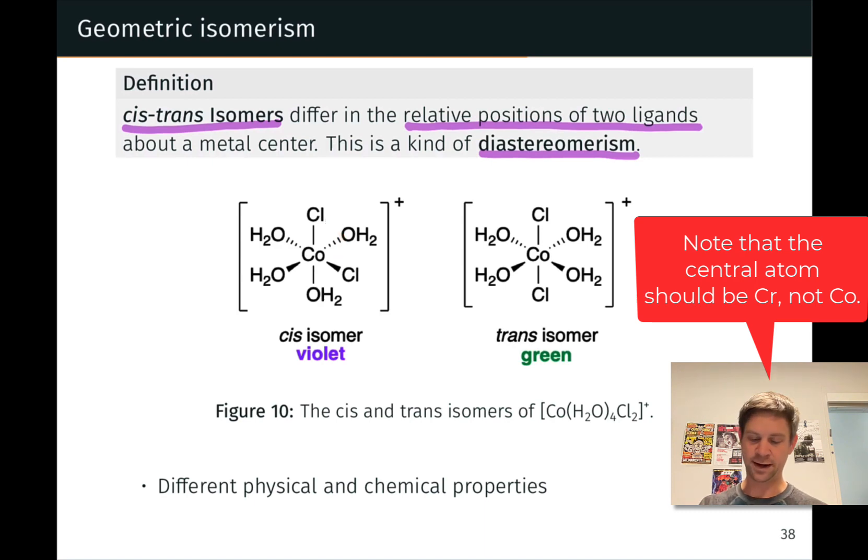On the other hand, in the complex on the right, we've got the two chlorines relatively far from each other. This is called a trans relationship. Cis evokes the idea that the two chlorine or chloride ligands are relatively close to each other, 90 degree bond angle. Trans evokes the idea that they're relatively far apart from each other. Here, this bond angle is 180 degrees.